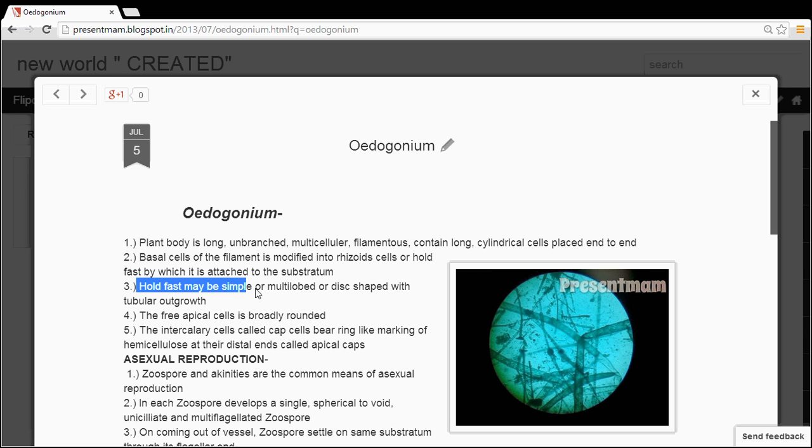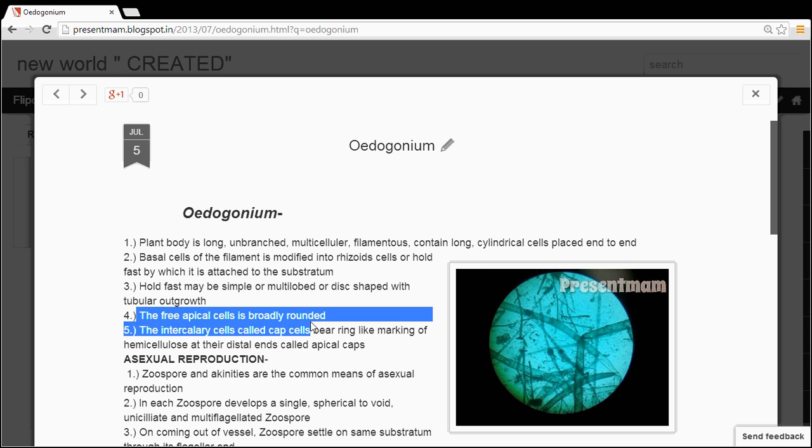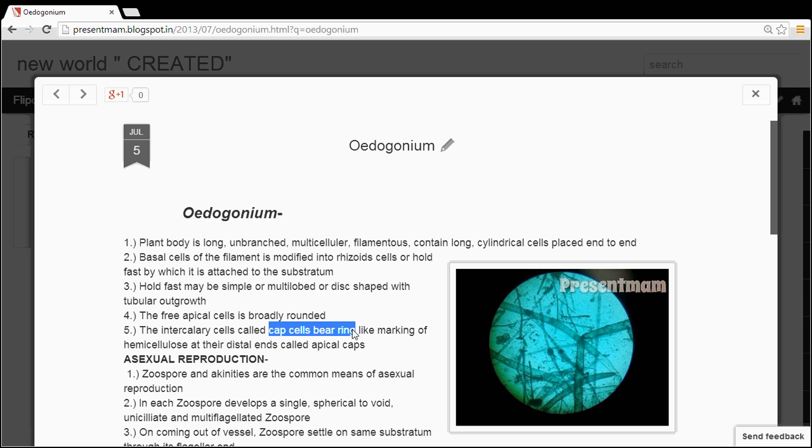The holdfast may be simple or multi-lobed or disc-shaped with tubular outgrowth. They have pre-apical cells which are broadly rounded. The intercalary cells called cell caps bear ring-like markings of hemicellulose at the distal ends called apical caps.